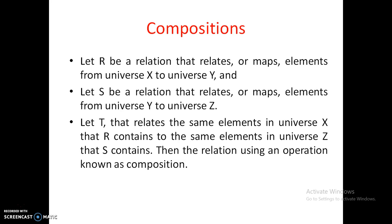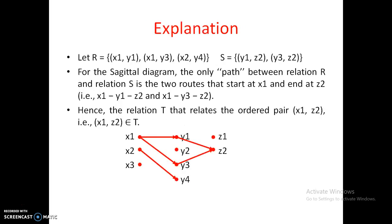For example, if R is a relation containing pairs x1-y1, x1-y3, and x2-y4, these are relations from universe X to universe Y, where small x's are elements in capital X and small y's are elements in capital Y. This relation is named capital R.